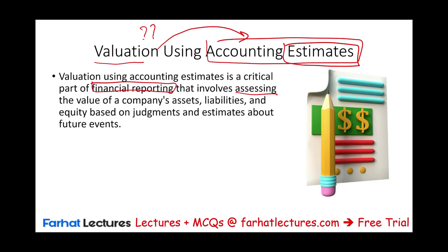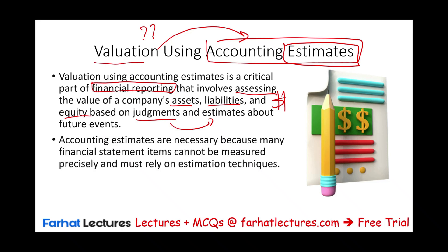It involves assessing — basically giving a value to the company's assets, liabilities, and equities. Simply put, assigning a dollar amount based on judgment and estimates about future events. We make assumptions, we make judgments, we make estimates, and based on these estimates we assign a dollar amount to those assets, liabilities, and equities. Those estimates are necessary because many financial statement items cannot be measured precisely. We must rely on estimates rather than precise figures.